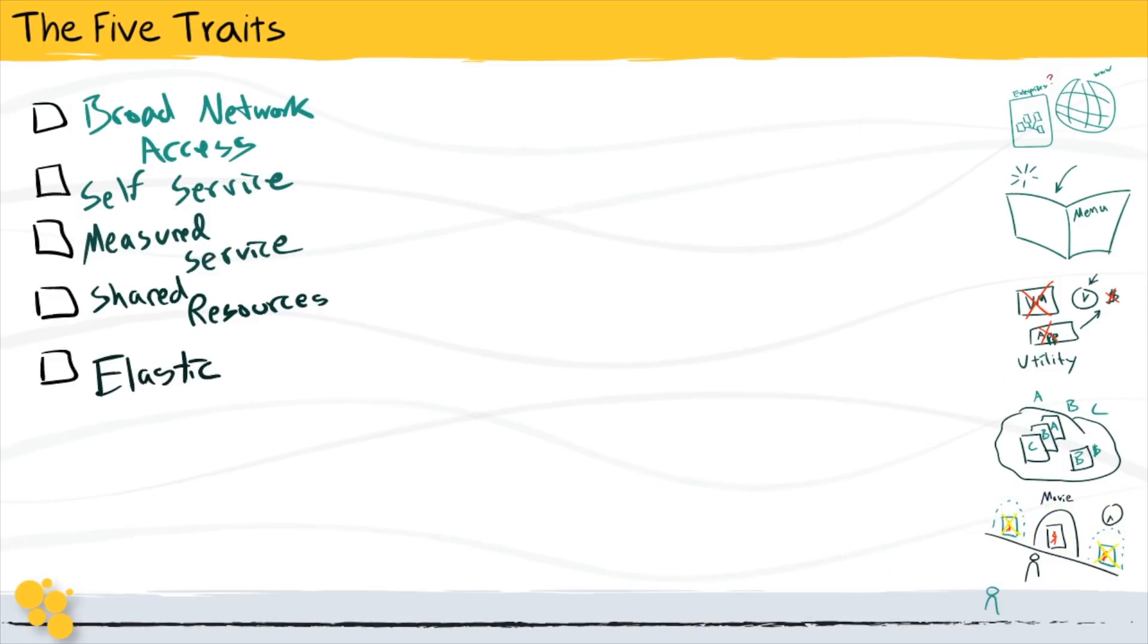And so now we've got a pretty well defined checklist of what a service should do in order to consider it a cloud computing service. Are people able to access resources over a network? That could be the internet or it could be an internal network. Is there a menu and self-service model that allows people to do this without necessarily having to interact directly with an administrator or with the service provider?